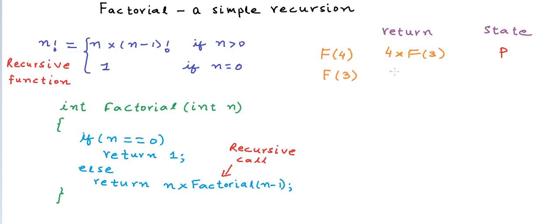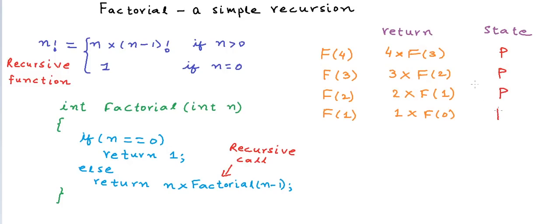F3 again makes a call to F2, so the computer pauses execution of F3 and goes to calculate F2. F2 again calls F1, so we pause again. F1 again calls F0. When we come to F0, there is no recursive call any further — this condition holds true where n is 0, and we simply return 1. F0 is the base condition, and if it were not there, this recursion would have gone on endlessly.